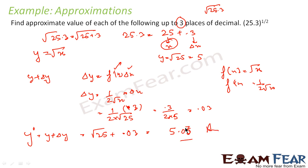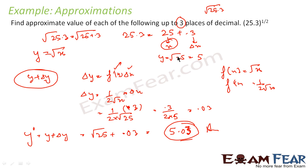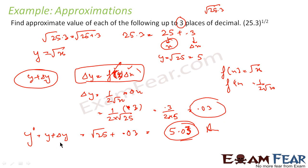So to summarize what I did: I broke 25.3 into x + Δx form, where x = 25 (so √x is easy) and Δx = 0.3. Then y becomes y + Δy. Finding y is simple. For Δy, I used Δy = f'(x)·Δx — this is where we use the derivative. I got Δy = 0.03, so the final answer is y + Δy = 5.03.